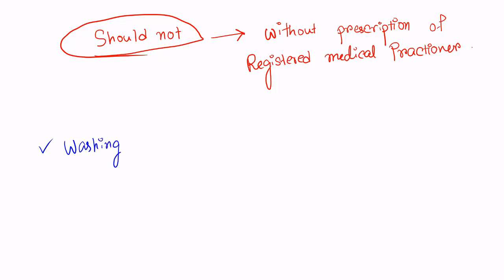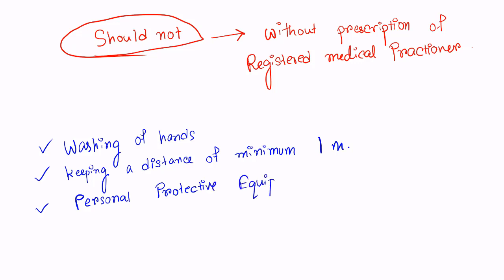The placing of healthcare workers under chemo prophylaxis should not instill a sense of false security. They should follow all prescribed public health measures such as frequent washing of hands, maintaining a distance of minimum 1 meter, and use of personal protective equipment.